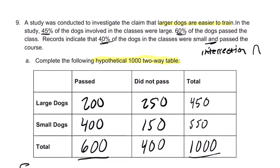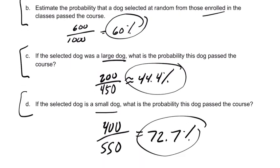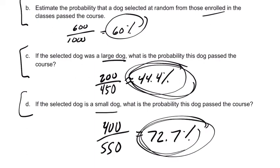Is the claim true? The answer is no. You can explain by saying large dogs were less likely to pass than small dogs — because only 44.4% of the large dogs passed while 72.7% of the small dogs passed. Make sure you reference the numbers. I hope this helped.